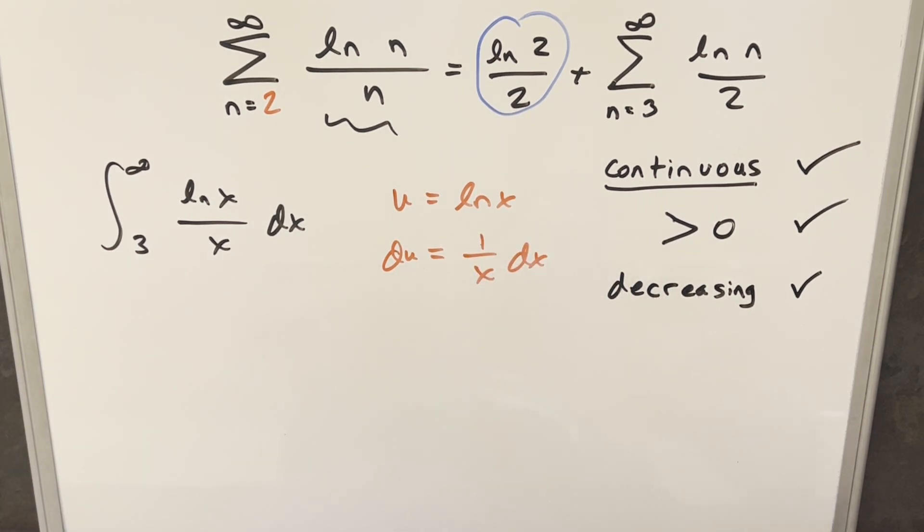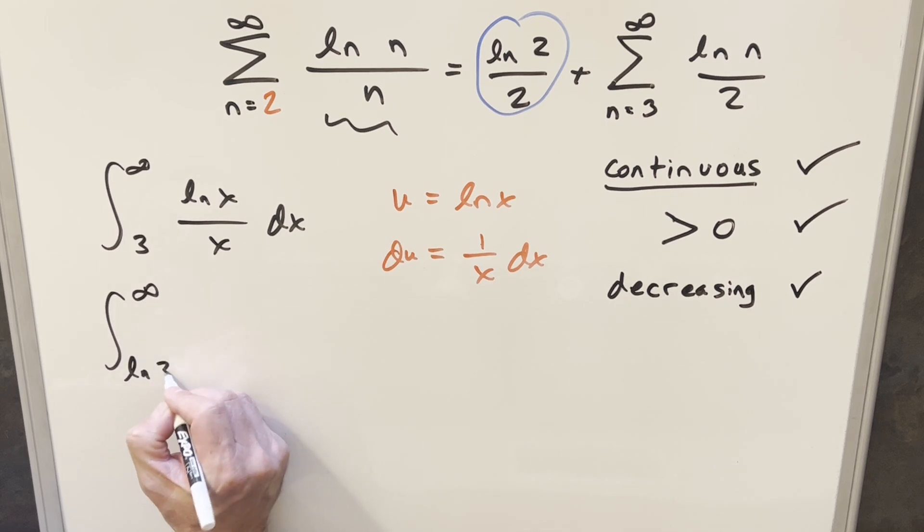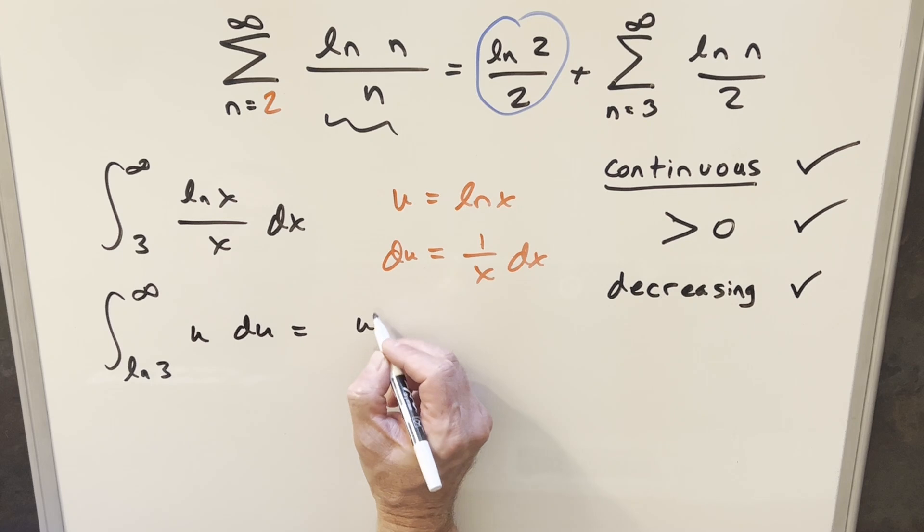So we'll do our u substitution. First, we plug in our bounds. So natural log at infinity is still going to be infinity. Natural log here, plug in 3, we'll just leave this as ln 3. Do the substitution, this is going to be 1/u du. Do this with power rule, we get u squared over 2 evaluated from ln 3 to infinity.